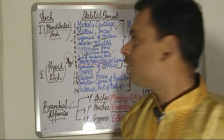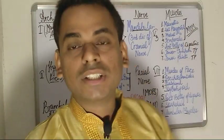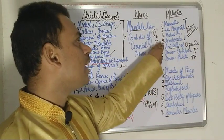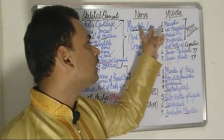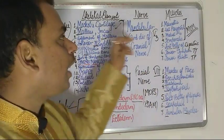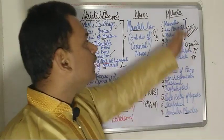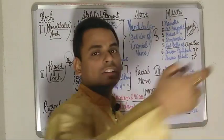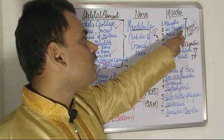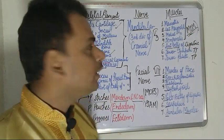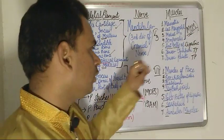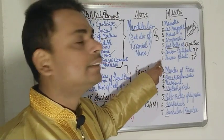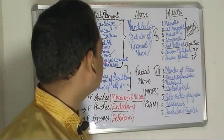The nerve derived from the first arch is the mandibular nerve, which is the third division of the trigeminal nerve (cranial nerve V). The muscles derived from the first arch are the muscles of mastication — masseter, lateral pterygoid, medial pterygoid, and temporalis — as well as the anterior belly of the digastric, tensor tympani, and tensor palati.